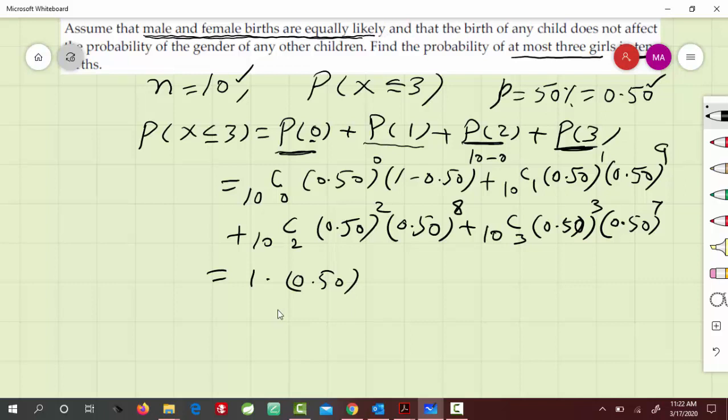Similarly, 10 choose 1 gives us 10, and then this part gives us 0.50 to the 10. Then this part here, 10 choose 2, gives us 45, times 0.50 to the 10.